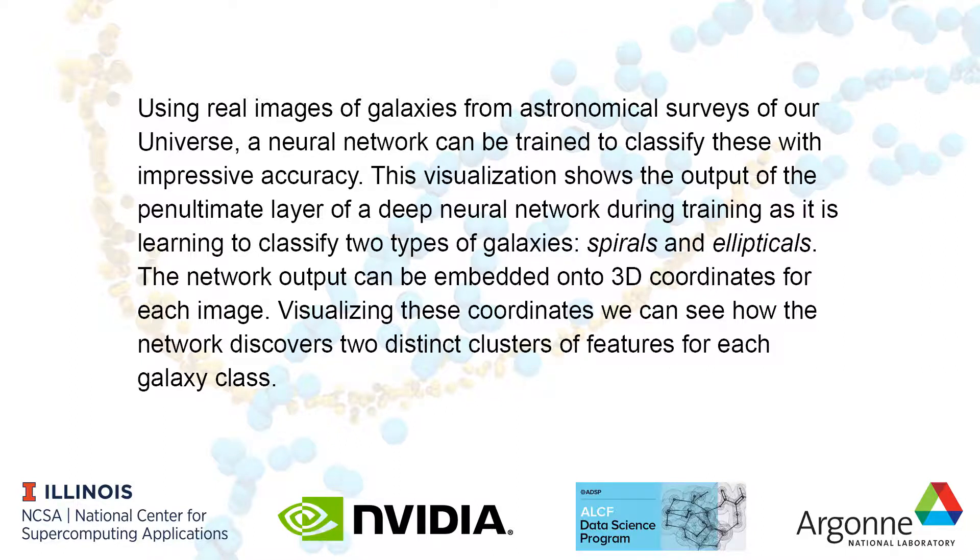Using real images of galaxies from astronomical surveys of our universe, a neural network can be trained to classify these with impressive accuracy. This visualization shows the output of the penultimate layer of the deep neural network during training as it is learning to classify two types of galaxies: spirals and ellipticals. The network output can be embedded onto 3D coordinates for each image. Visualizing these coordinates, we can see how the network discovers two distinct clusters of features for each galaxy class.